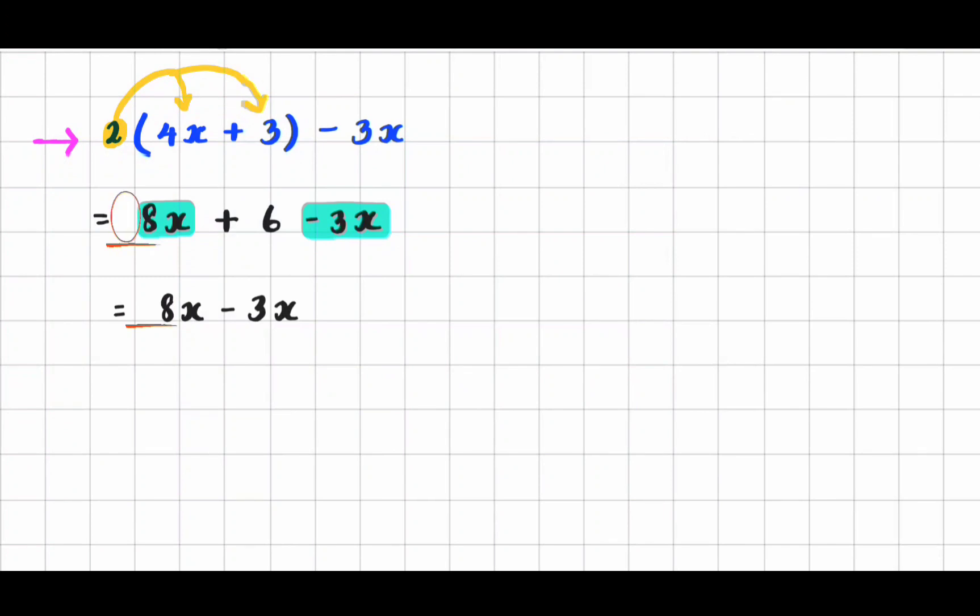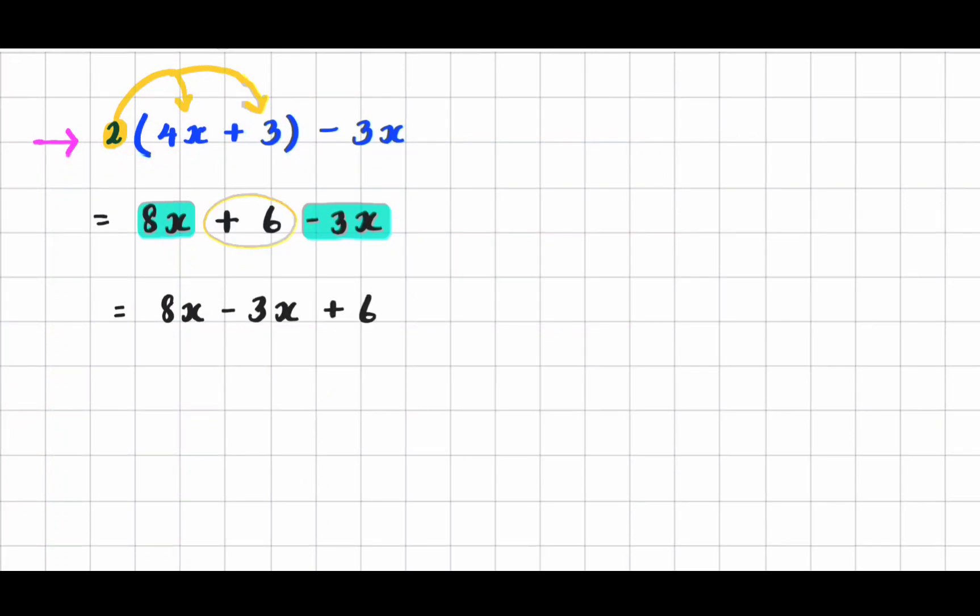The 8x doesn't have that because it's the leading coefficient but that just means that it's positive or there's no need to put a plus sign when you start something in math and bring down the plus 6. So I am doing 8x minus 3x which is 5x.